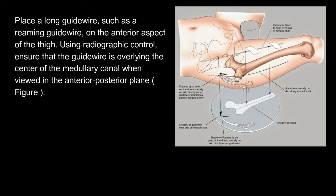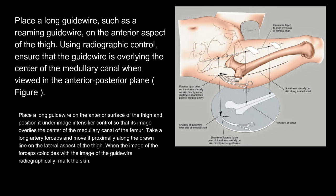Place a long guidewire, such as a reaming guidewire, on the anterior aspect of the thigh. Using radiographic control, ensure that the guidewire is overlying the center of the medullary canal when viewed in the anterior-posterior plane. Place a long guidewire on the anterior surface of the thigh and position it under image intensifier control so that its image overlies the center of the medullary canal of the femur. Take a long artery forceps and move it proximally along the drawn line on the skin. Screen this instrument using an image intensifier in the anterior-posterior plane. When the image of the tip of the forceps coincides with the guidewire radiographically, mark the skin.